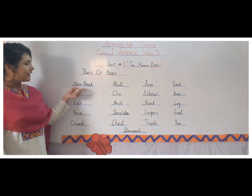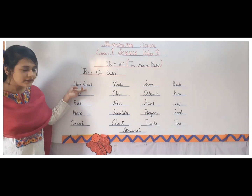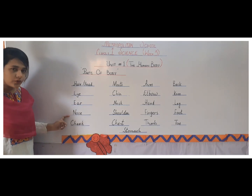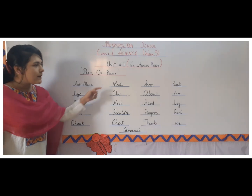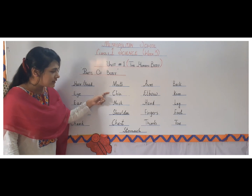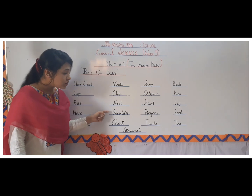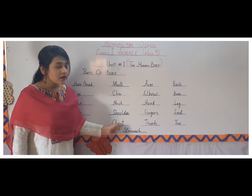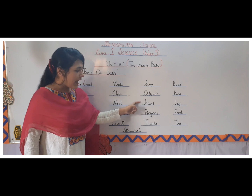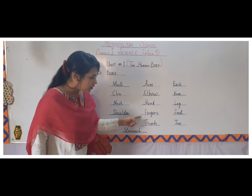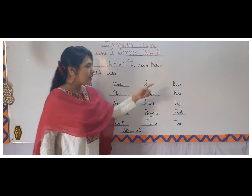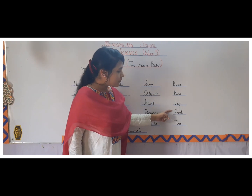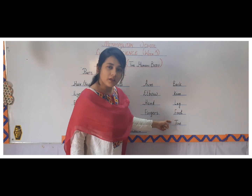Let's repeat it again: hair and head, eye, ear, nose, cheek, mouth, chin, neck, shoulder, chest, stomach, arm, elbow, hand, fingers, thumb, back, knee, leg, foot, and the last one — toe.